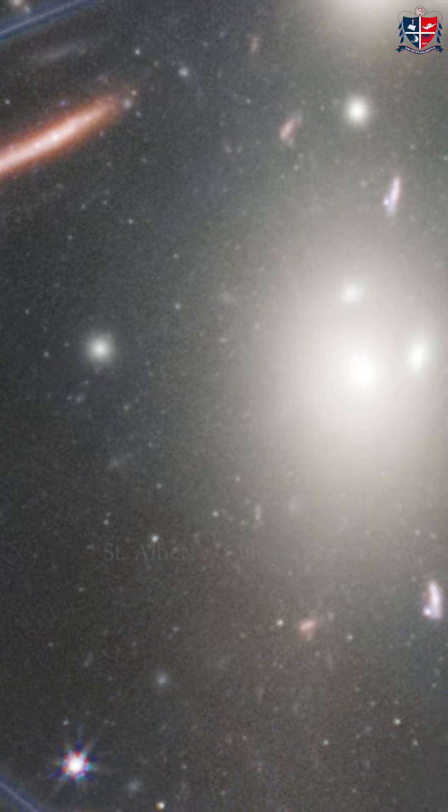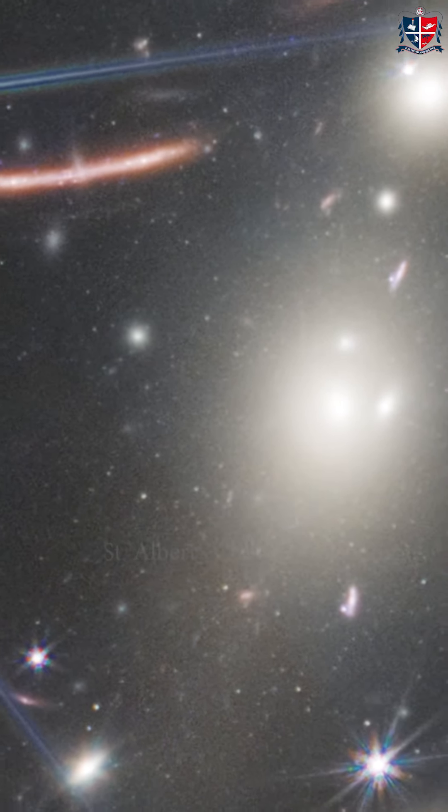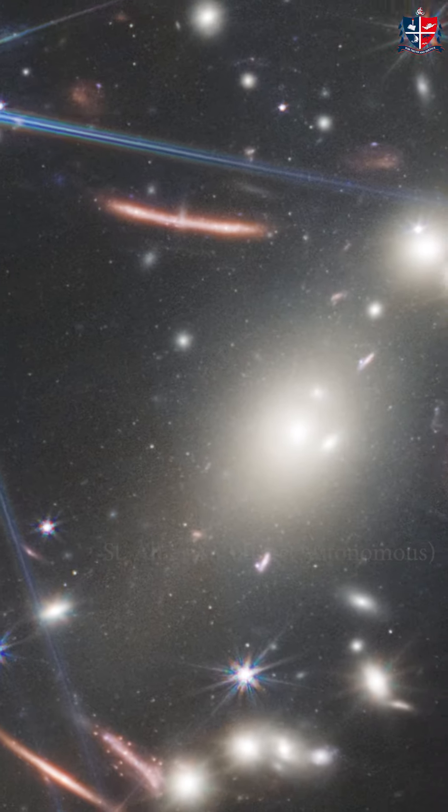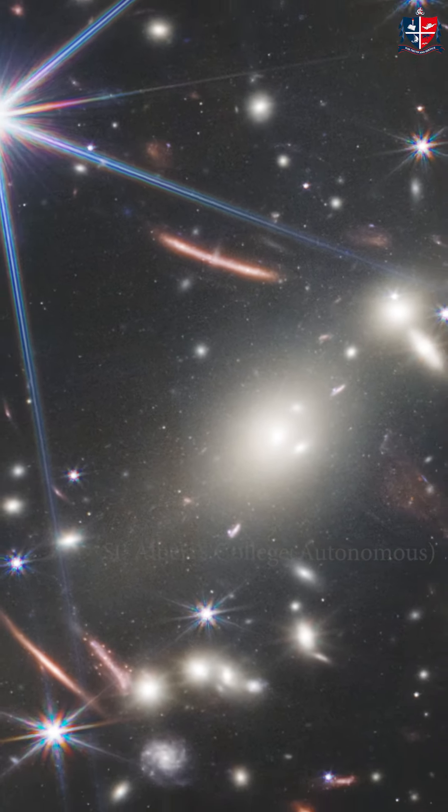The first image is named as Webb's first deep field. This image is taken from a part of a sky that is the size of a grain of sand held at arm's length.